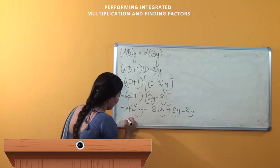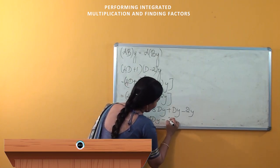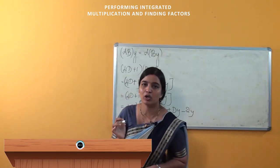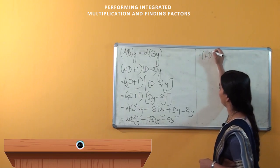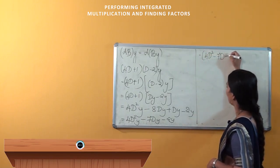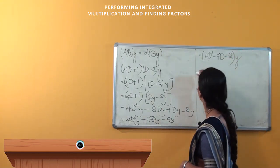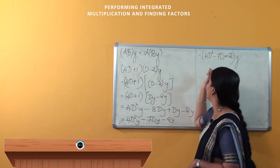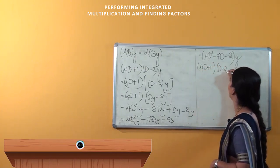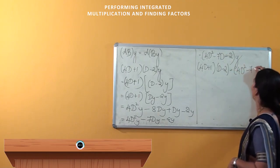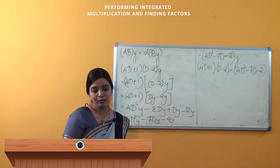Simplifying further, we get 4D²y − 7Dy − 2y. Taking y common outside, we get (4D² − 7D − 2) into y. So we observe that (4D + 1)(D − 2) is nothing but 4D² − 7D − 2. In this way, we can perform the integrated multiplication.